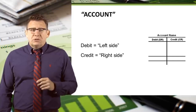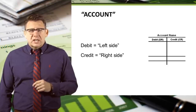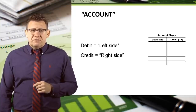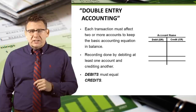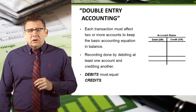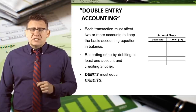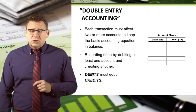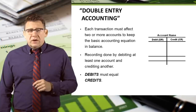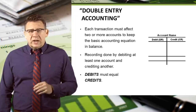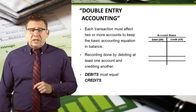Debits and credits are how different accounts are increased or decreased, but they don't mean increase or decrease because it depends on which account they affect. Each transaction must affect two or more accounts to keep the accounting equation in balance. This is known as double entry accounting, so every transaction must include at least one account that is debited and one account that is credited. There can be more than two accounts, but there can never be less, and debits must always equal credits or the accounting equation would be out of balance.